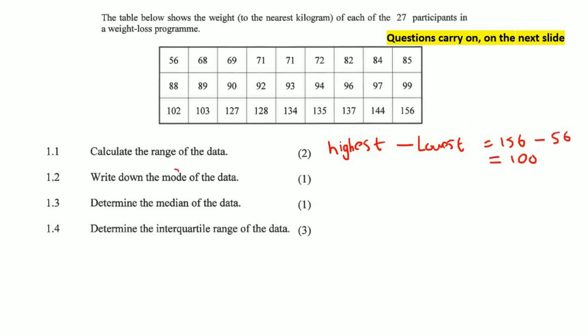Write down the mode. The mode is the value that appears the most — the number you see most often. Looking at the data, I can see there are two 71s. Let's check if there are any other repeating numbers. No, it's just that. So the answer is 71.